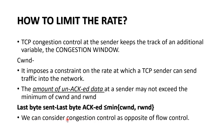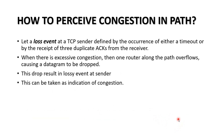We can consider congestion control as the opposite of flow control. To detect congestion in the path, we consider a loss event. A loss event occurs when there are three duplicate ACKs or a timeout. If there is excessive congestion, one router along the path overflows, causing a datagram to be dropped, which constitutes a loss event indicating congestion on the transmission line.